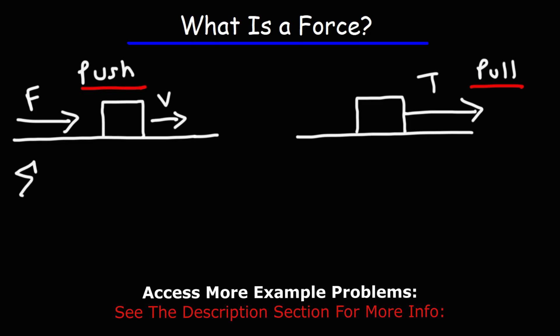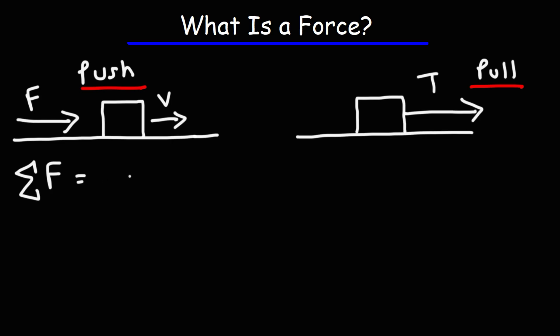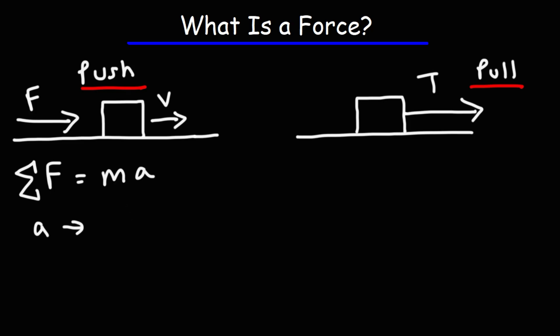According to Newton's second law, the net force acting on an object is equal to the mass times acceleration. So once we apply a force on this object — and let's assume there's no friction — this object will begin to accelerate. Whenever there's an acceleration, there's a change in velocity. If the acceleration is positive, the velocity will increase. If the acceleration is negative, the velocity will decrease. So once we apply a force, it causes the object to accelerate, the velocity increases, the object speeds up, and whenever you increase the velocity, you increase the kinetic energy.